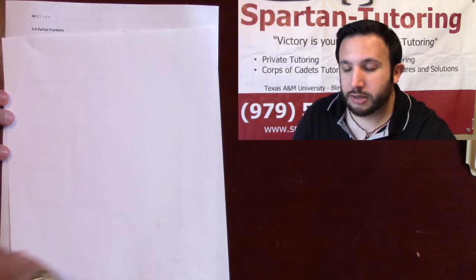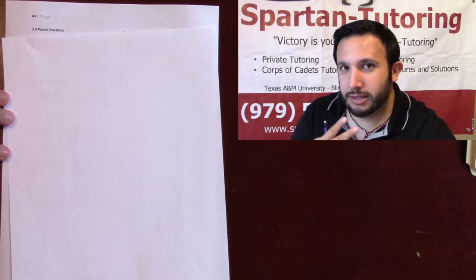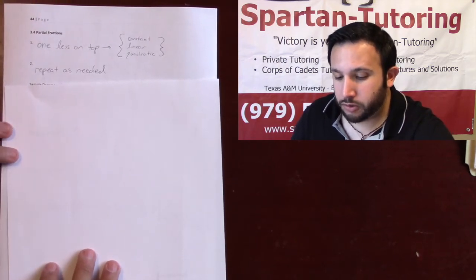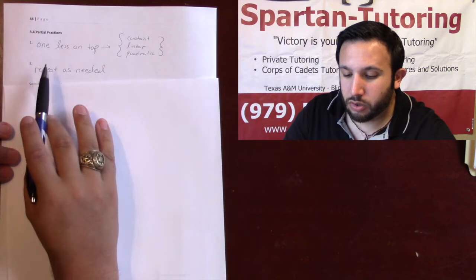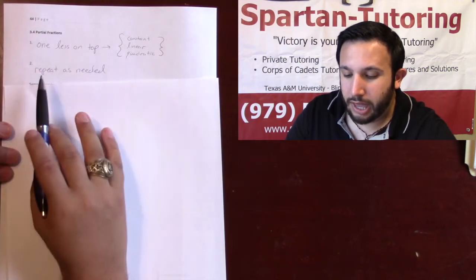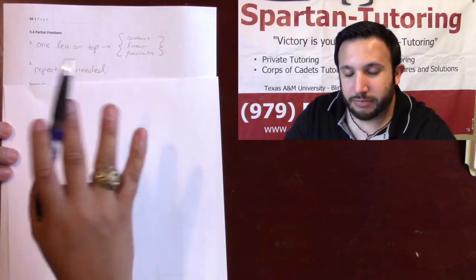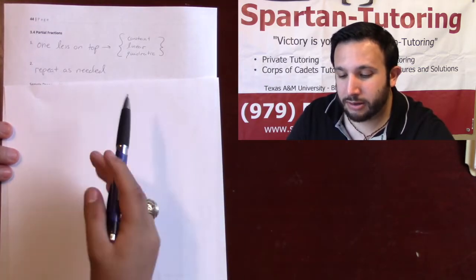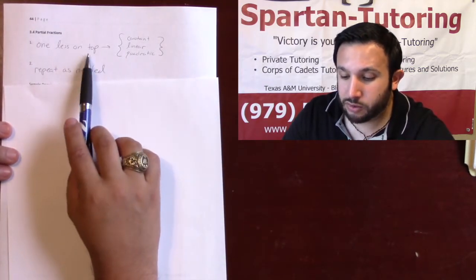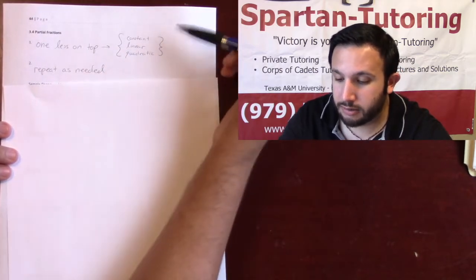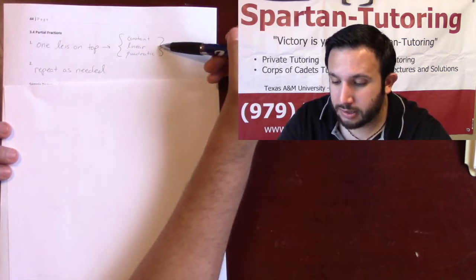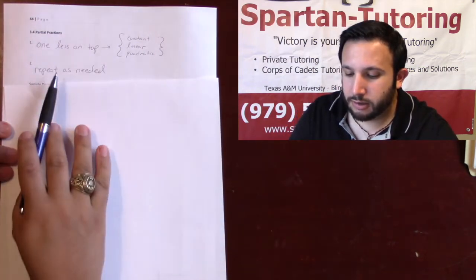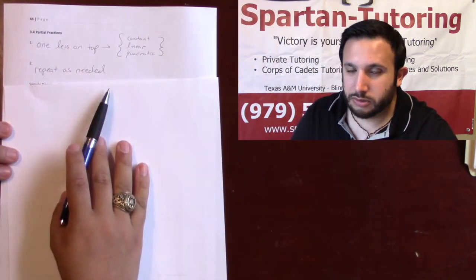For partial fractions I have two rules: I want one less on top, and I want to repeat as needed. I know it's ambiguous — just hang tight, we'll run through several examples. For the 'one less on top' rule, jot this down: constant, linear, and quadratic. These are my only two rules.